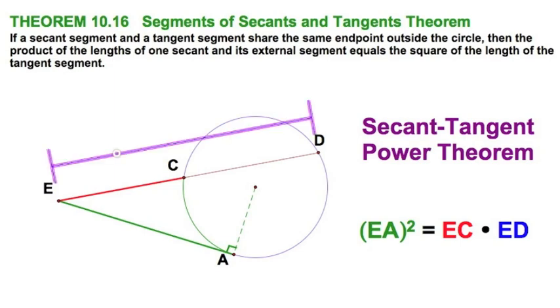Remember, the blue segment I'm referring to, the entire secant, is ED. So, you've got EA squared equals EC times ED.